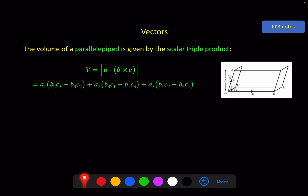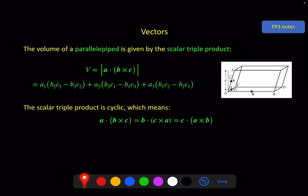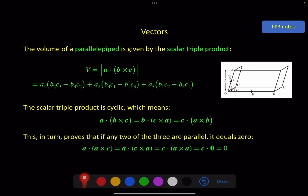Now there are two things to note. The first is that the scalar triple product is cyclic. That means so long as you keep the same order in a left-to-right cycle — a, b, c; a, b, c — these three results are the same. And that also tells you that if any two of these vectors are the same, then you get zero. That's because a cross itself is zero, and a vector dotted with the zero vector gives you zero. And I hope that makes sense in terms of the shape, because if any of these three defining vectors are parallel, then you end up collapsing your 3D shape to a 2D shape and it doesn't have any volume.